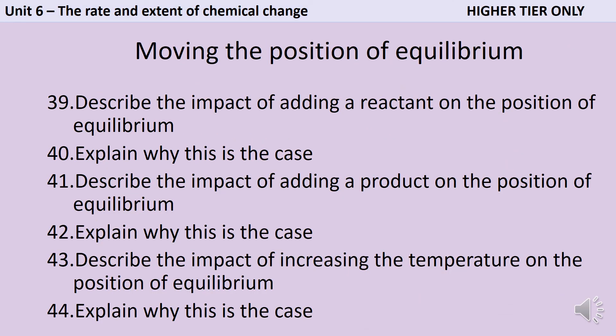This last part is just for higher tier, so if you're sitting the foundation tier you don't need to watch it. If we add a reactant, then the position of equilibrium is going to shift to the right because the forward reaction is going to be favored. If you think about it, if we're adding more of the reactants, the things on the left, we're increasing the concentration of them. They're more likely to collide with the other chemicals and react. Meanwhile, the backward reaction is still going at the same speed, so overall this pushes the equilibrium to the right.